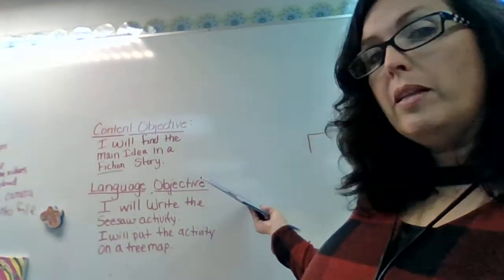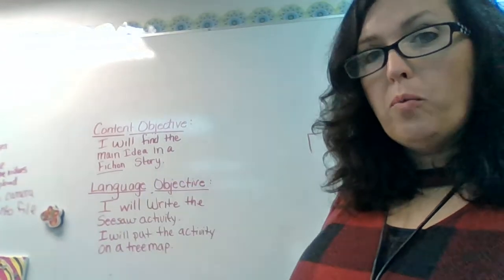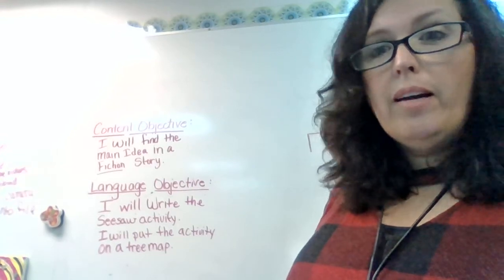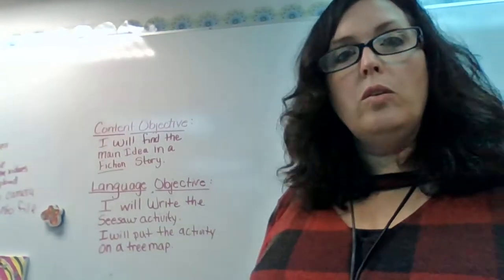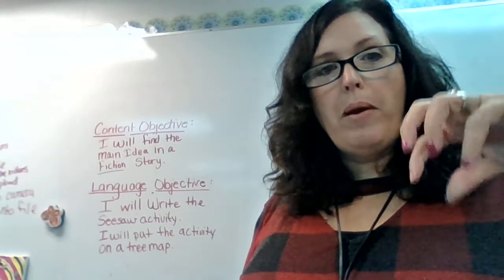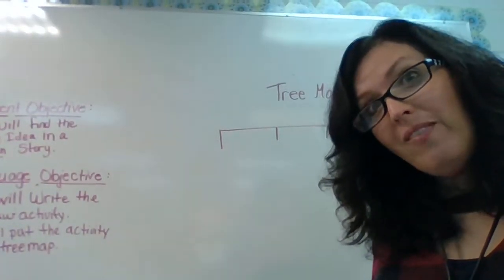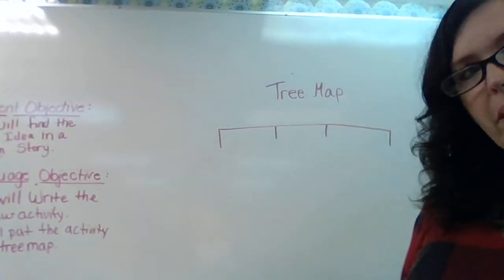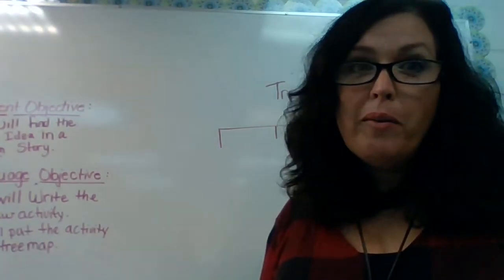When you're done with the video, your language objective is to write in the Seesaw activity I put in for you — you're going to do the work in Seesaw. Then I want you to take paper and pencil and make a tree map. This is a tree map. Tree maps are fantastic for main idea — they're my favorite. I hope you remember these from last year. If not, I'm going to show you how to make one right now.